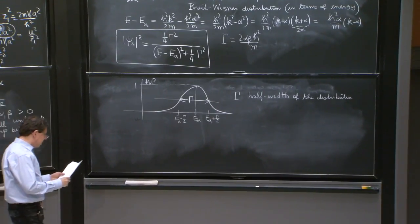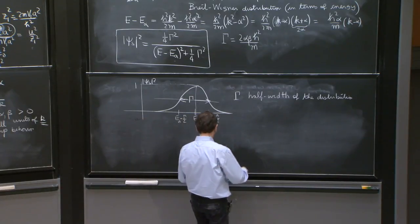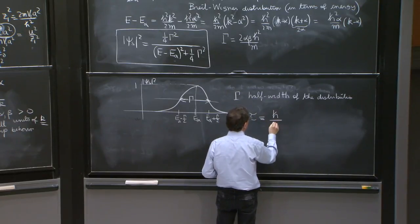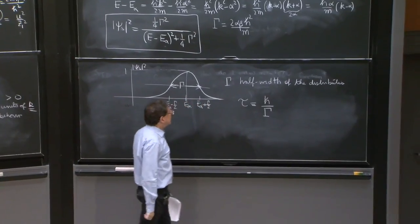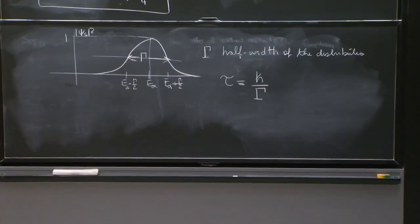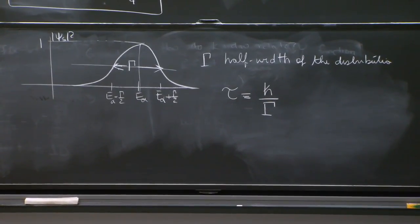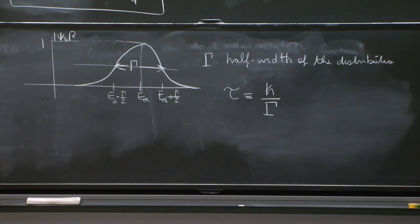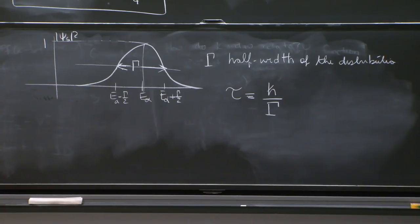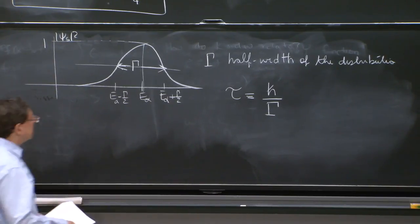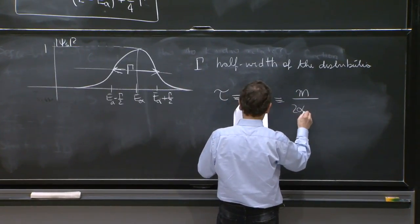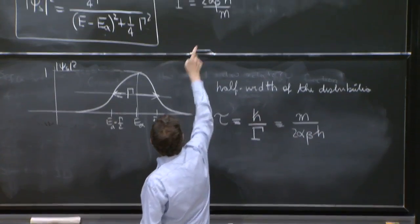So gamma has units of energy. And from a unit of energy, you can get a time. So tau, you can define it as h-bar over gamma. That has units of time. H-bar has units of energy times time. So if you divide by energy, you get units of time. And what is this number? So this is some time. And it's equal to n over 2 alpha beta h-bar of this gamma.